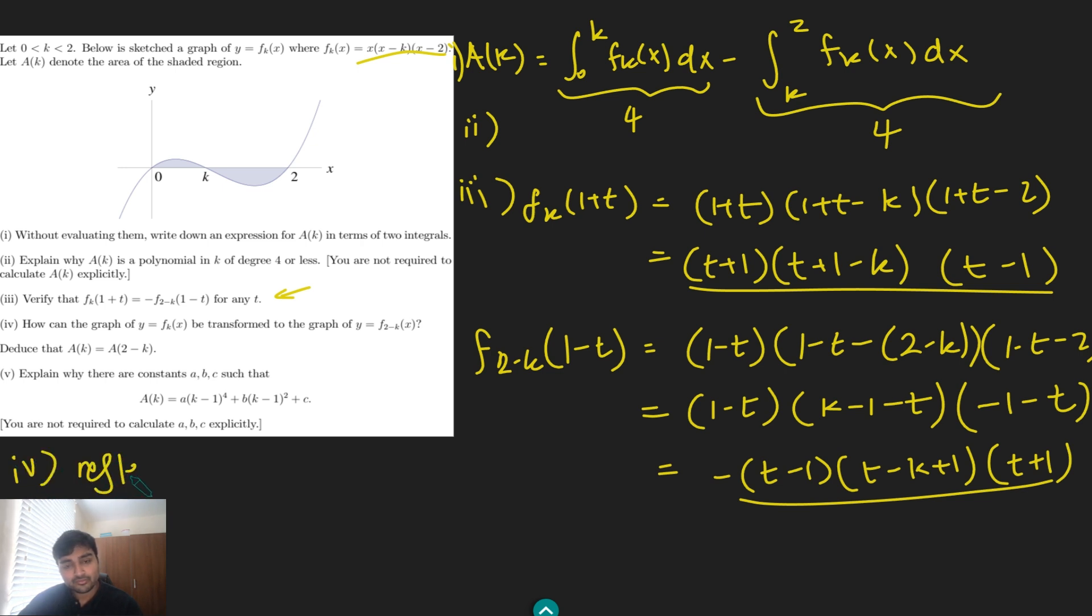But let me just write down the answer for part 4. It's a reflection in x equals 1 and x-axis in some order. It doesn't really matter. You can either reflect it in the x-axis first, then reflect in the line x equals 1, or do it the other way around. How do I know that? Well, let's ignore this minus sign, because this minus sign here just means the reflection in the x-axis. So let's ignore that for the time being.